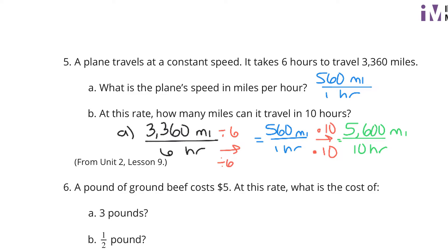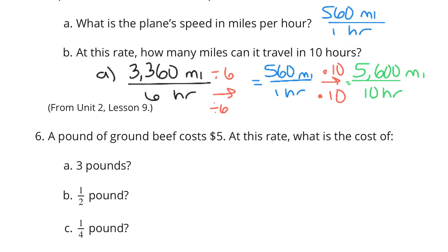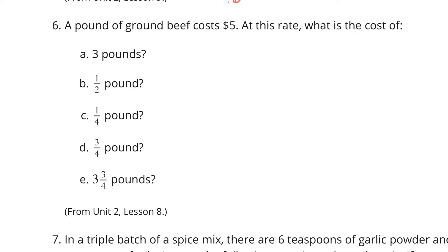A pound of ground beef costs $5 in question six. At this rate, what is the cost of three pounds, half a pound, fourth a pound, three-fourths a pound, three-and-three-fourths a pound? Anyways, if it's $5 a pound, I can take 5 times 3 to get $15. I can take 5 times 1 half to get $2.50. I can take 5 times 1 fourth here to get $1.25.